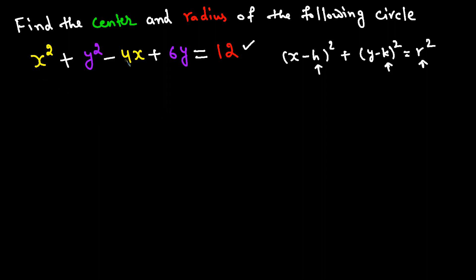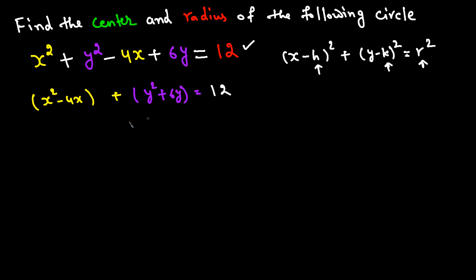Combine the X terms and Y terms separately: (X² − 4X) + (Y² + 6Y) = 12. To complete the square for the X group, take the coefficient of X, which is −4, divide by 2 to get −2, and square it to get 4. Add 4 inside the X group.